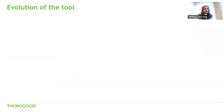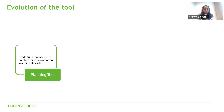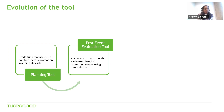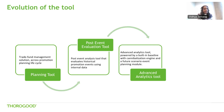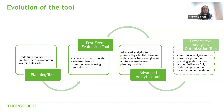Let's look at a quick evolution of the tool. The trade promotion analytics tool once started as a planning tool — a trade fund management solution across promotion and planning lifecycle. It then became a post-event evaluation tool, used to evaluate promotion cycles once deployed in the market. The current version is an advanced analytics tool that unlocks market data insights powered by a built-in baseline with cannibalization engine and a future scenario event planning module. The intended final version, the next release, is a prescriptive analytics optimization tool guided by past results, fully equipped to deliver optimized promotion calendar recommendations.